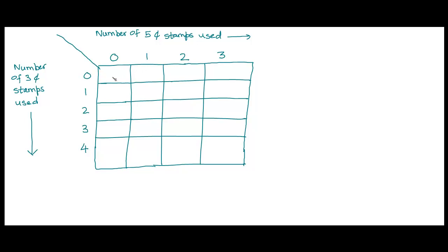Let's fill in the entries in the table. Since there are five rows and four columns, we have a total of five times four, or twenty entries in the table. How many different values for the postage amounts will we find in the table? We need to fill in all the entries to find out.